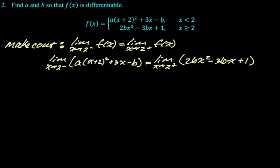So if we just substitute in 2, we're gonna get 16a plus 6 minus b equals 8b minus 6b plus 1, which gives us this equation. So we have 16a minus 3b equals negative 5.